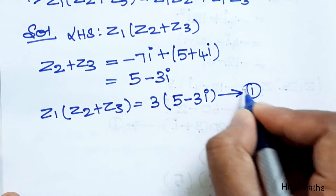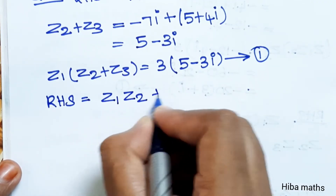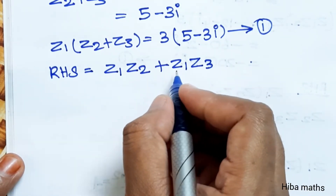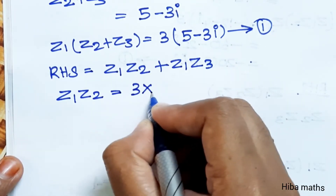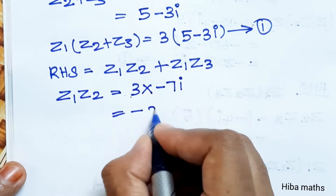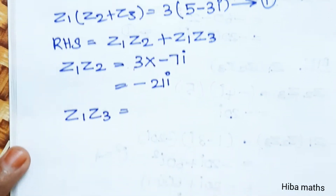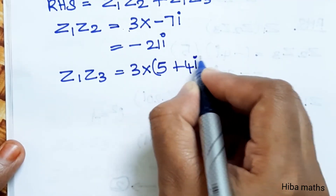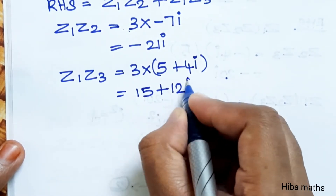For the RHS part: z1 into z2 — z1 value is 3, z2 value is minus 7i, so 3 times minus 7i gives minus 21i. Then z1 into z3 — z1 value is 3, z3 value is 5 plus 4i, so 3 into 5 is 15, plus 3 times 4i is 12i. Result: 15 plus 12i.